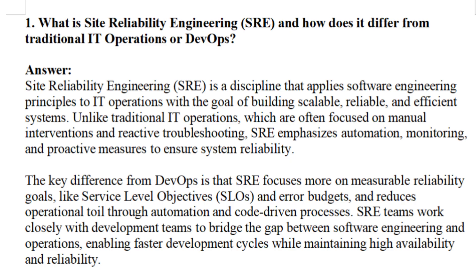The key difference from DevOps is that SRE focuses more on measurable reliability goals like Service Level Objectives and error budgets, and reduces operational toil through automation and code-driven processes. SRE teams work closely with development teams to bridge the gap between software engineering and operations, enabling faster development cycles while maintaining high availability and reliability.